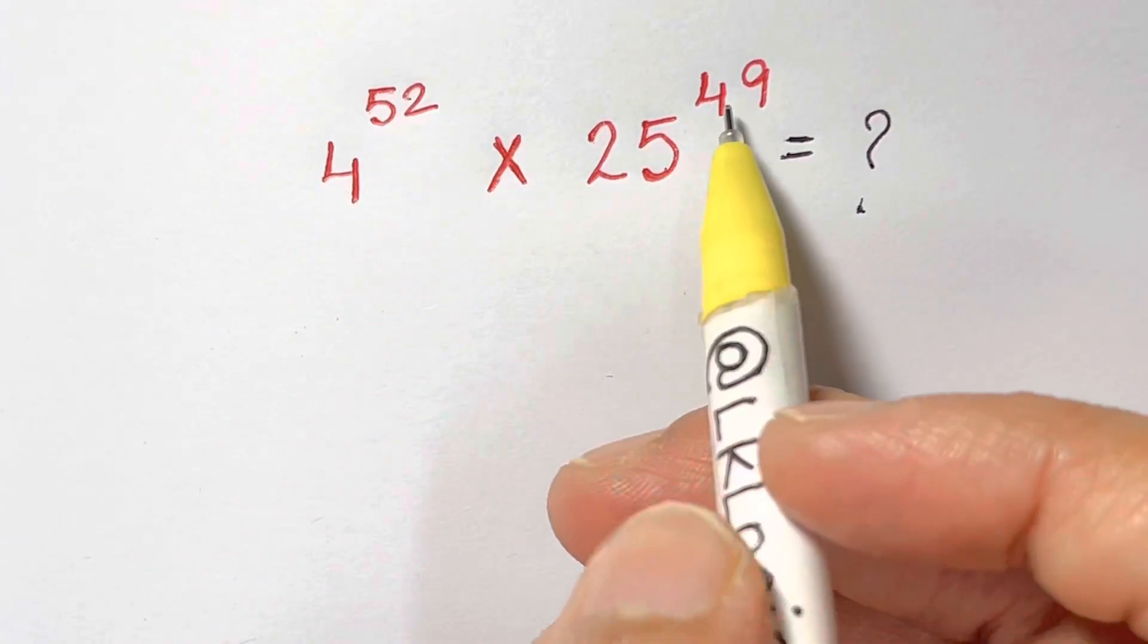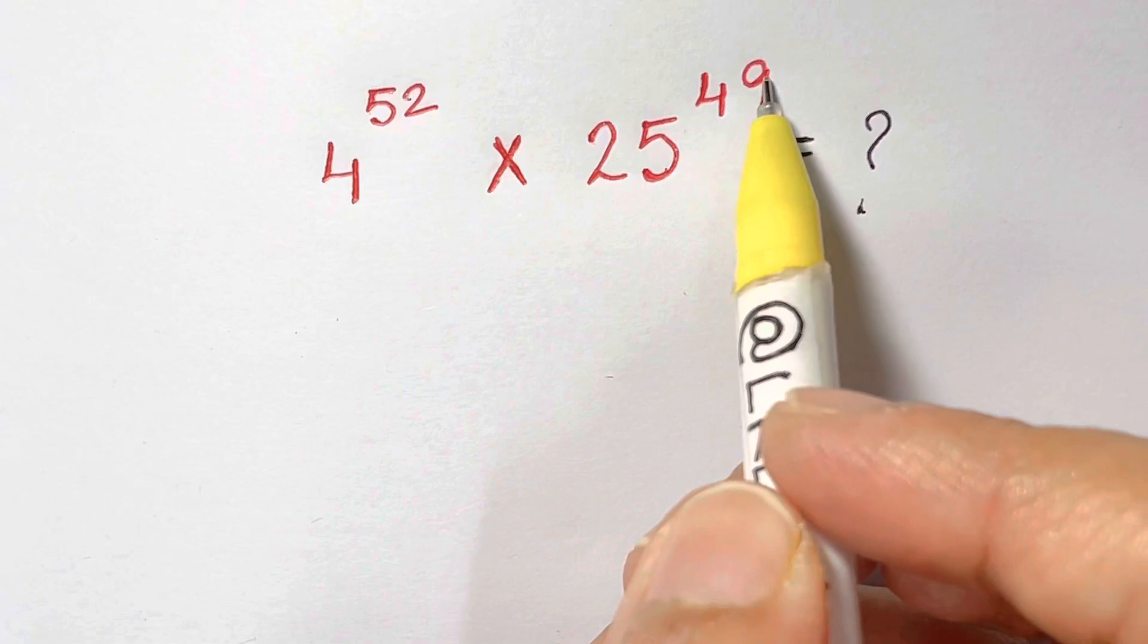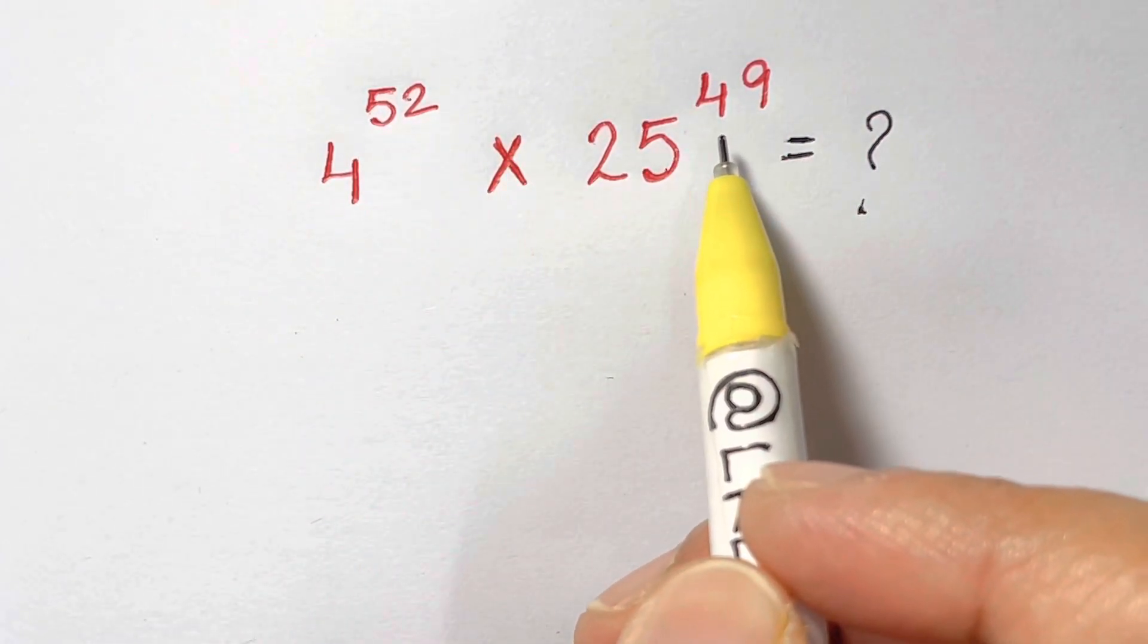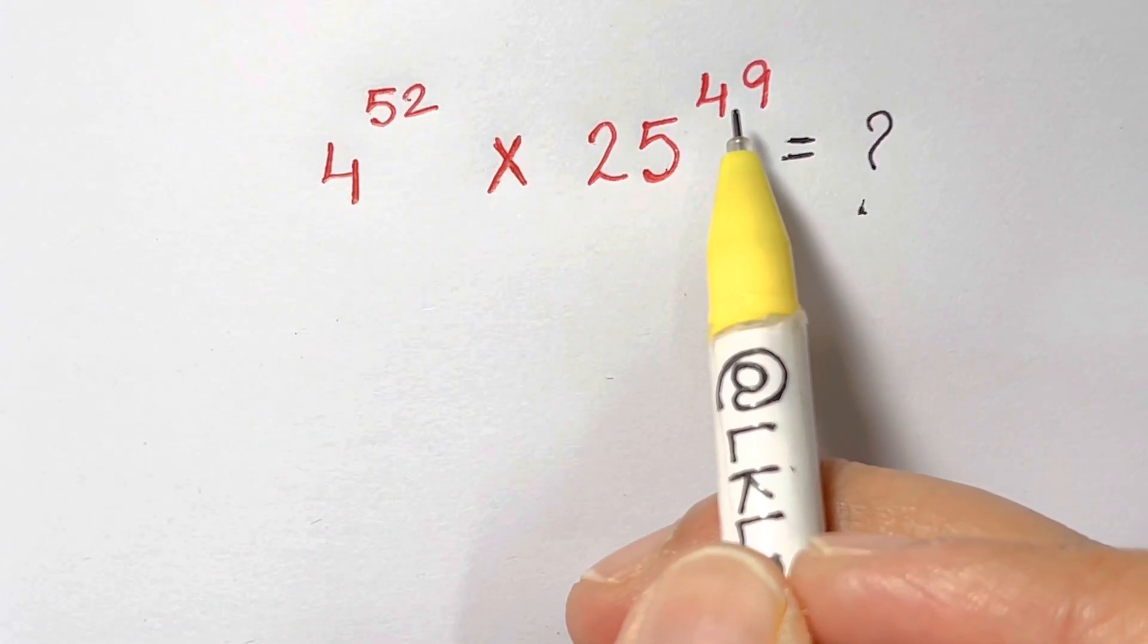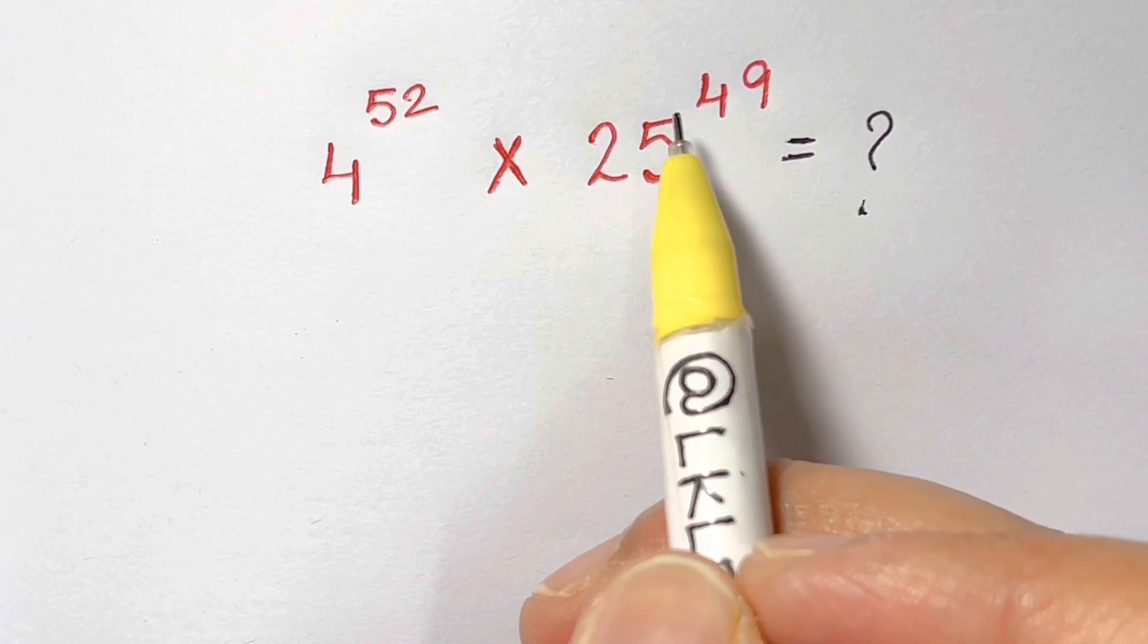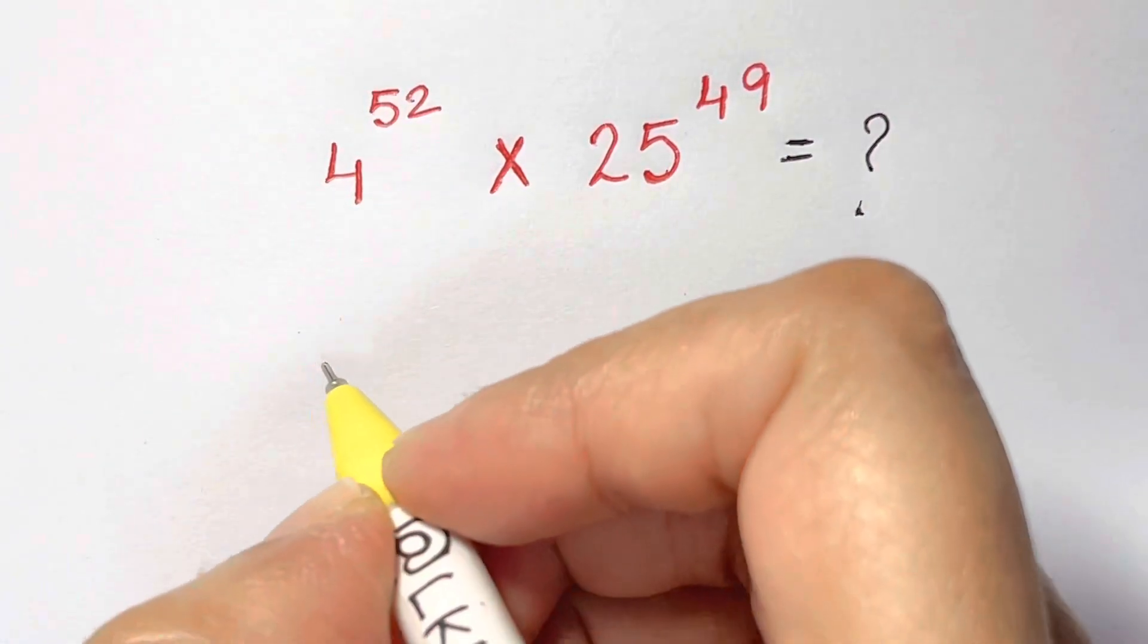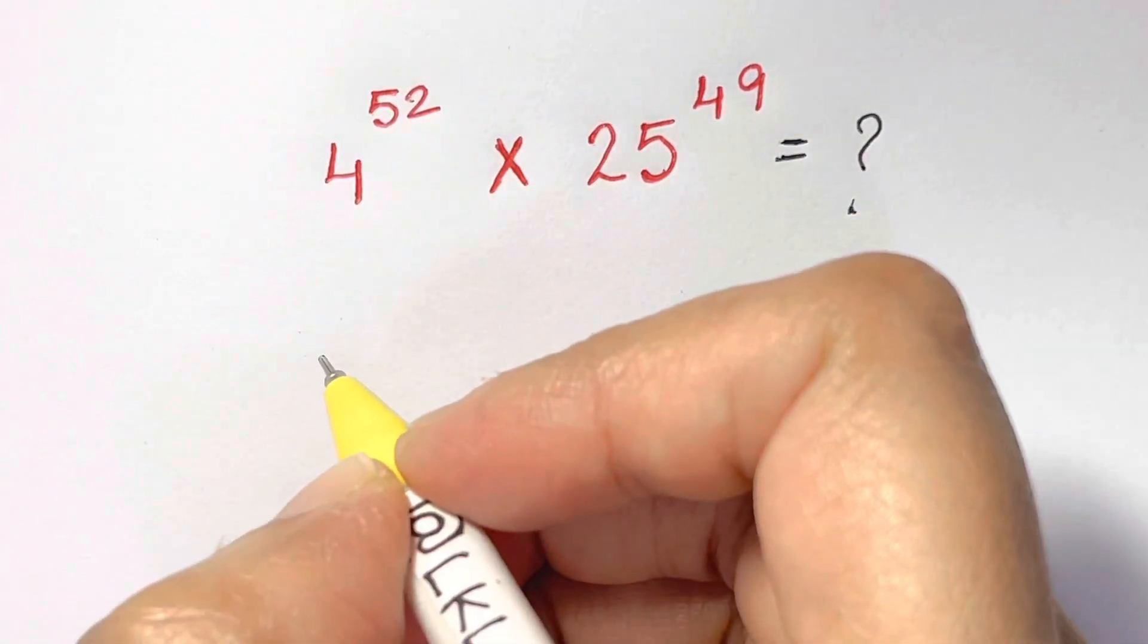If you see the exponents, there is a relation because 52 and 49 are close to each other. So we can just write it as this one. I'm going to write it as 4 cubed times 4 to the power of 49.